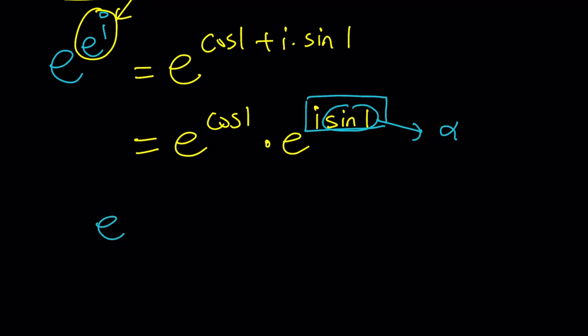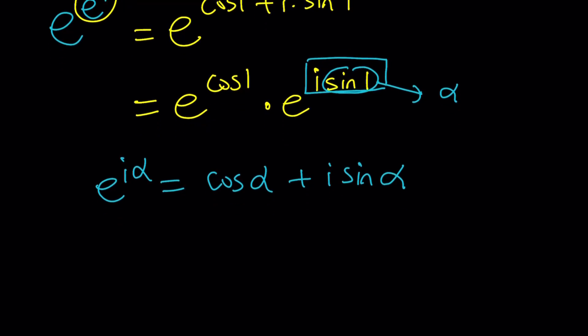So how do you write e to the i alpha? You write it as cosine alpha plus i sine alpha. That's why substitution is awesome. It's big, okay? Now, let's go ahead and replace alpha with sine 1. And then, hopefully, you'll see what I'm talking about.